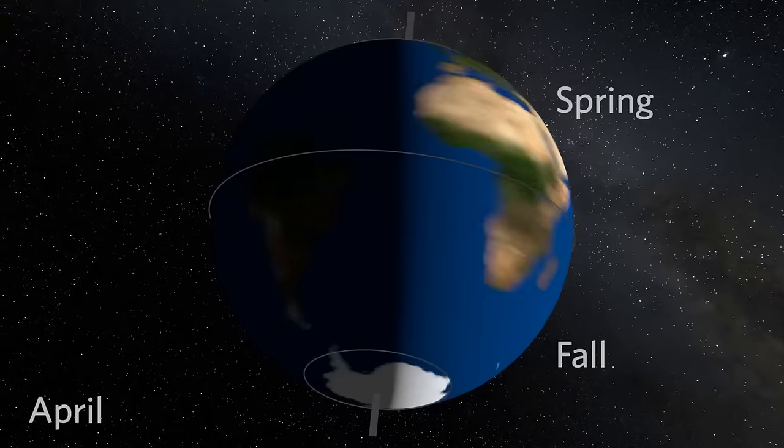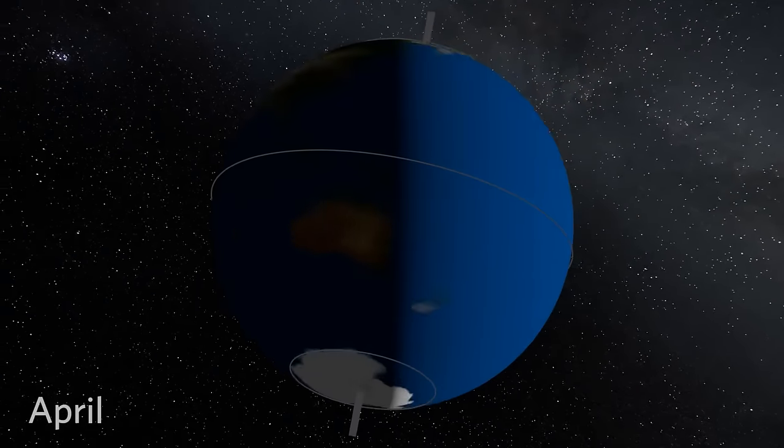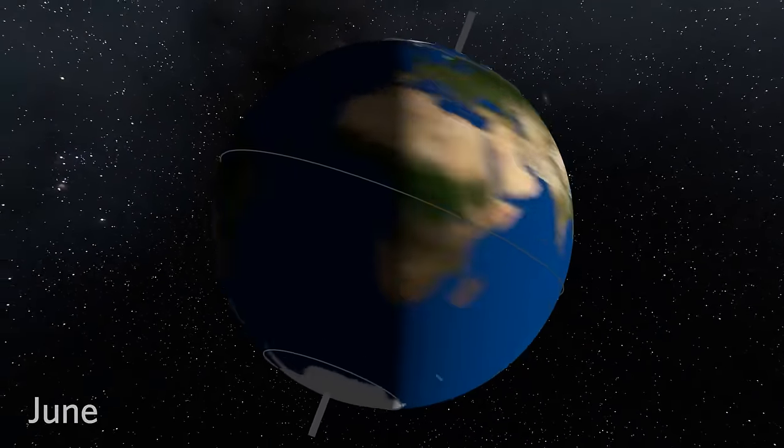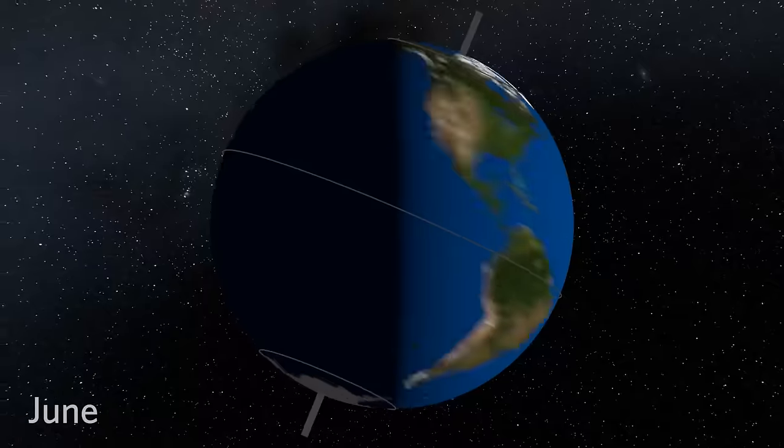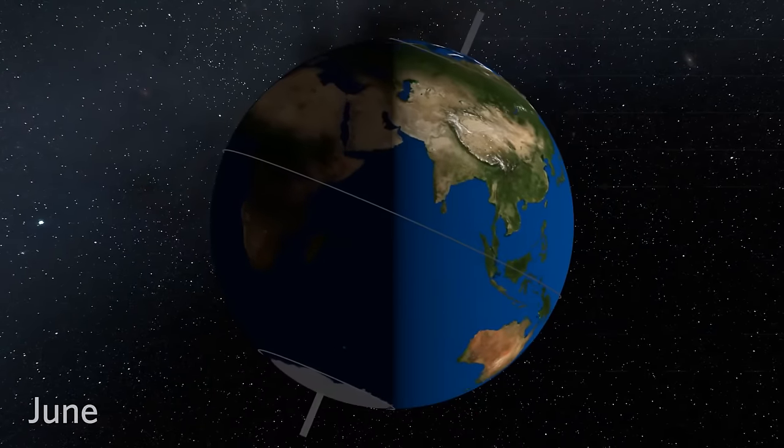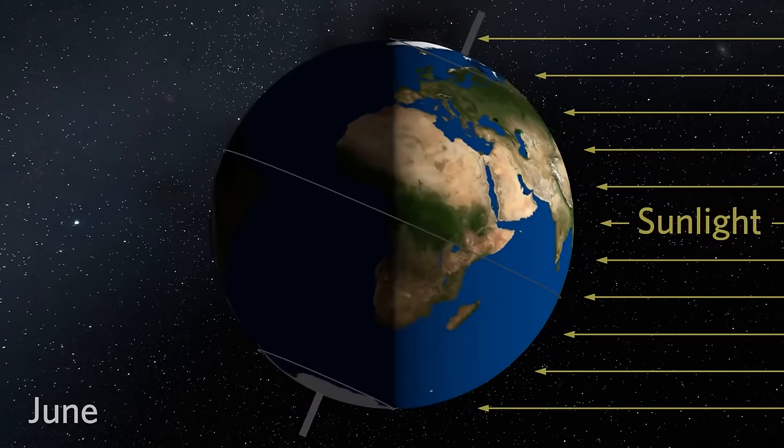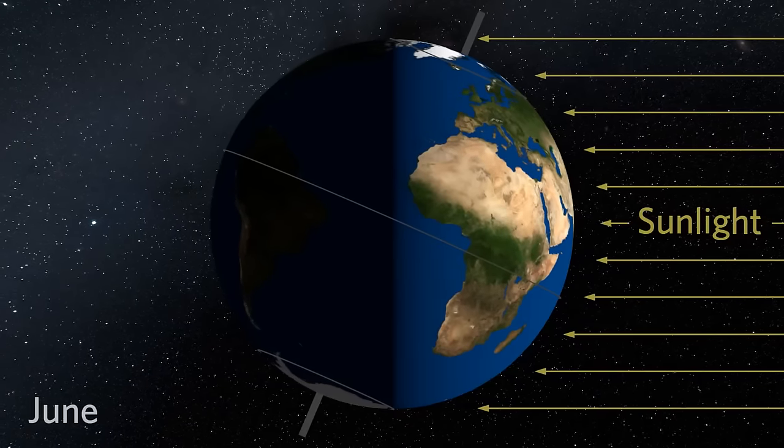As we make our way to the summer months, notice that Earth is still tilted in the same direction only now on the other side of our orbit. The North Pole is tipping toward the Sun. Sunlight strikes the Northern Hemisphere more directly, and the Sun stays in the sky for a longer time.